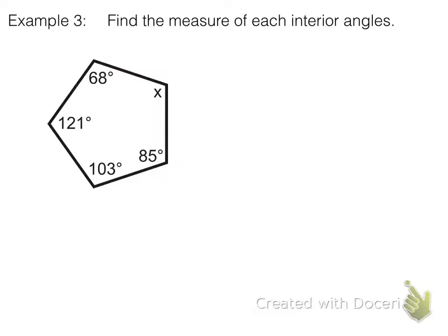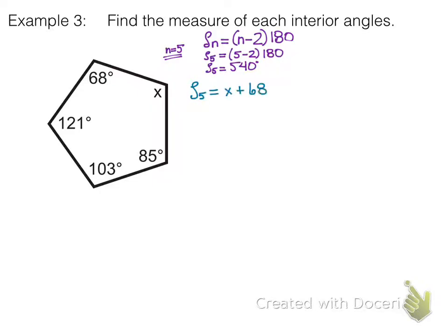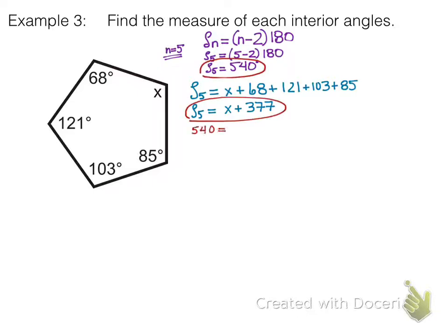In example three, we have five different angles and five different sides. We know the sum of the interior angles: n is 5, so five minus two times 180 gives us 540. The sum of all of them has to be 540. We can also add all the given angles together. Both expressions equal the sum of a five-sided shape, so we set them equal: 540 equals x plus 377. Subtracting, we get x equals 163.